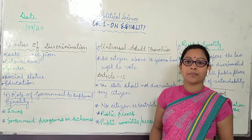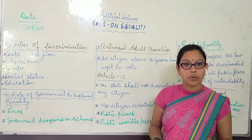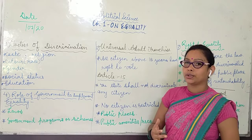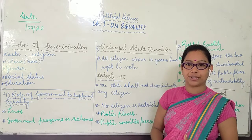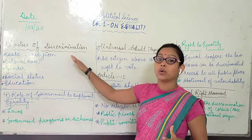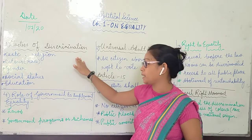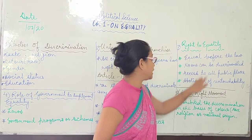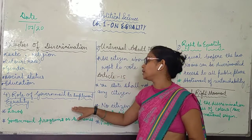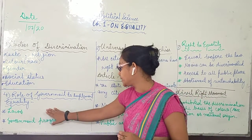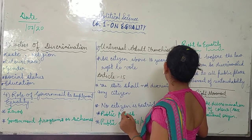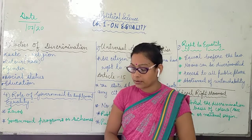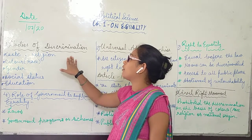Today we are going to study about the discrimination and unequal treatment of citizens of a country. We will cover the following topics: factors of discrimination, universal adult franchising, right to equality, role of government to implement equality, Article 15, and the civil rights movement. Let's go through them one by one, starting with factors of discrimination.